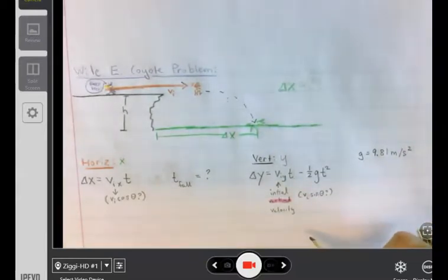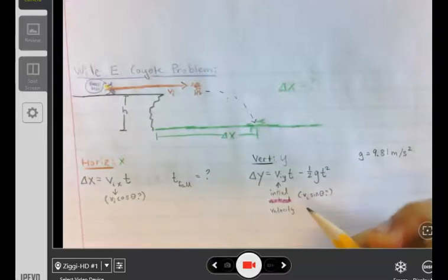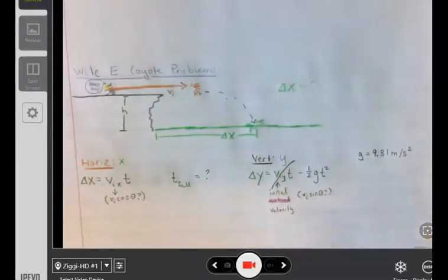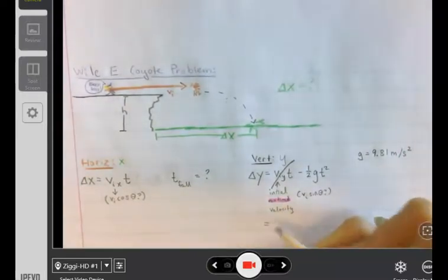Now, review. What effect does horizontal motion have on vertical motion? None. Whatsoever. Bam.